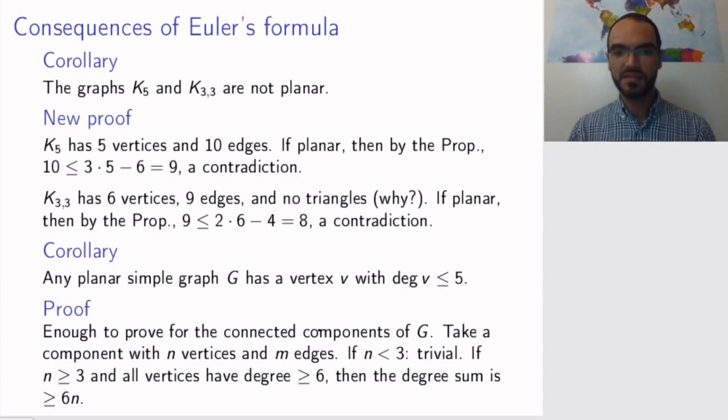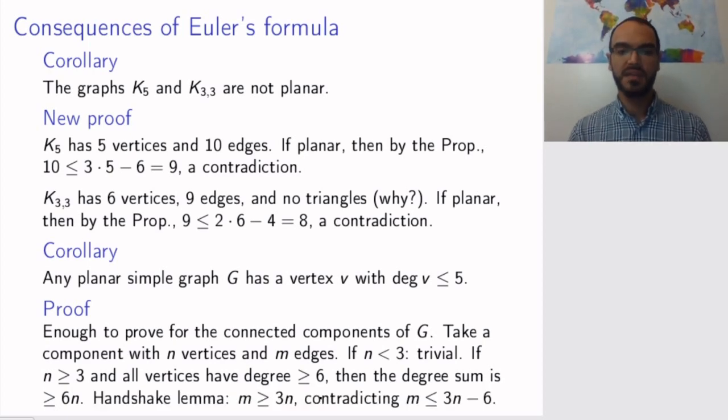So assume that this is not the case. Assume that we don't have a degree smaller than or equal to five. So all vertices have degree at least six. So the sum of all the degrees is at least six times the number of vertices. But then the handshake lemma tells us that the number of edges, which is half the sum of the degrees, is at least 3n. So if the degree sum is at least 6n, the handshake lemma says that the number of edges is at least half of that, which is 3n.